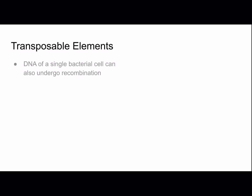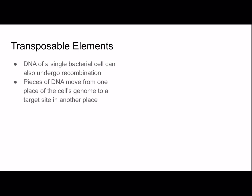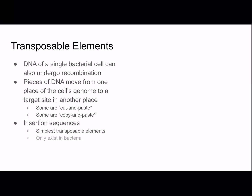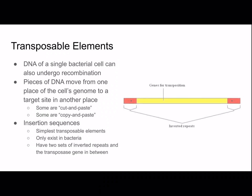Transposable elements are pieces of DNA that can move from one place in a cell's genome to another target site. Some are cut-and-paste; some are copy-and-paste. Insertion sequences are the simplest transposable elements and only exist in bacteria — keep in mind bacteria are prokaryotes, so many things are simpler than the equivalent in eukaryotes. Insertion sequences have two sets of inverted repeats with the transposase gene in between, as shown in the picture.